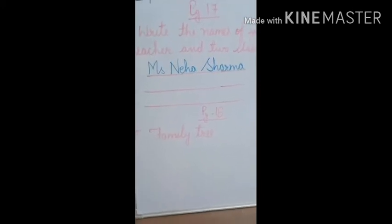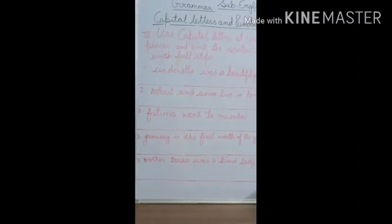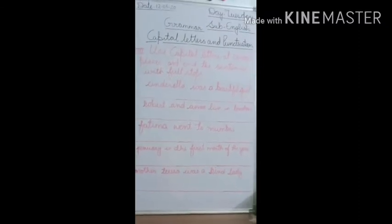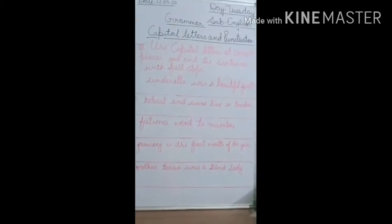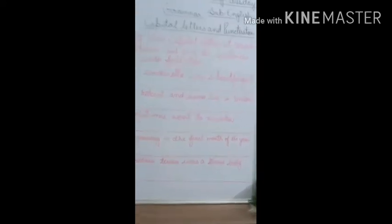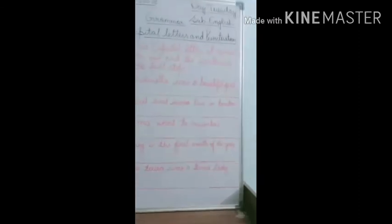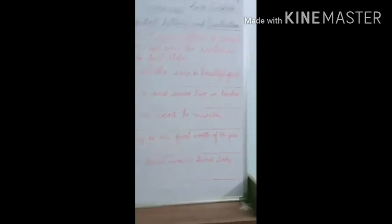I'll tell you about the next part in the next video. Now let's proceed to the third question: use capital letters at correct places and end the sentences with full stops. As we all know, a sentence always begins with a capital letter. Let's start with the first sentence: Cinderella was a beautiful girl.